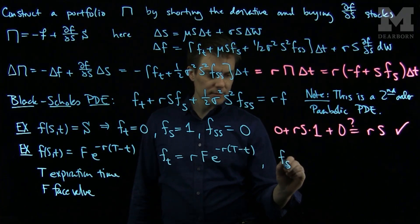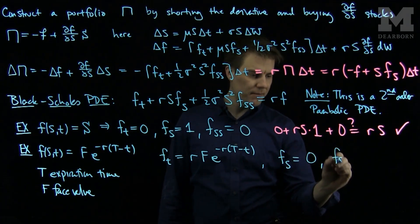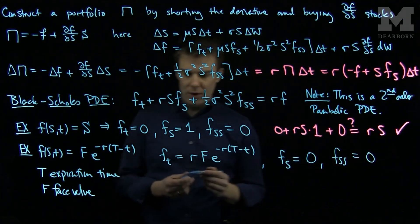fs, there's no s dependence in here, so fs is zero, and fss is zero. So we can see,